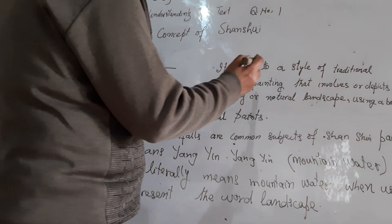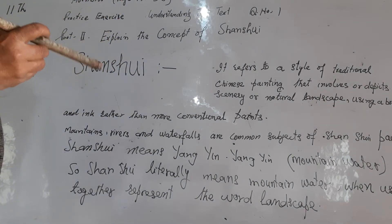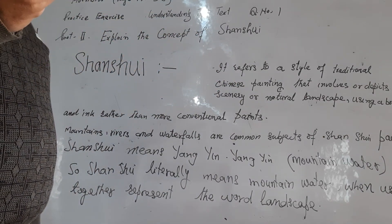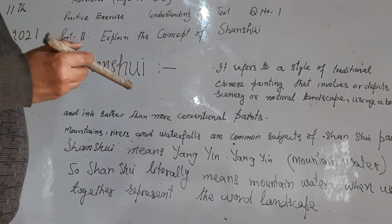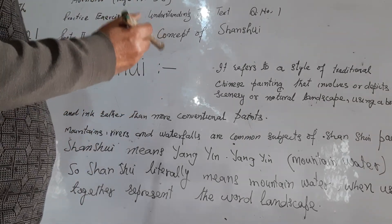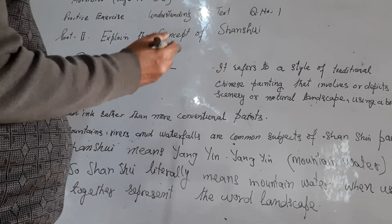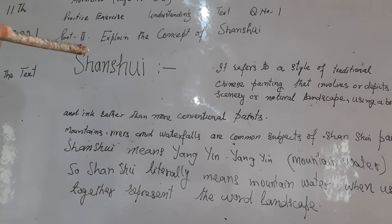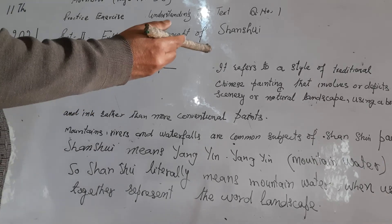Shanshu refers to a style of traditional Chinese painting that involves or depicts scenery or natural landscape — paintings of mountains, lines, waterfalls, and rivers. It refers to a natural landscape using a brush and ink rather than more conventional paints. In Shanshu, we use ink and brush rather than colored paints.